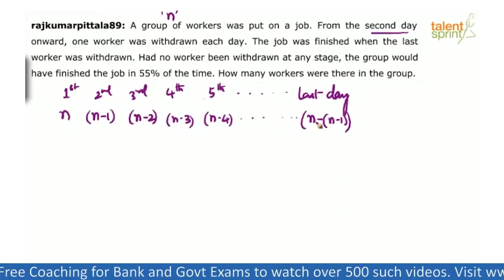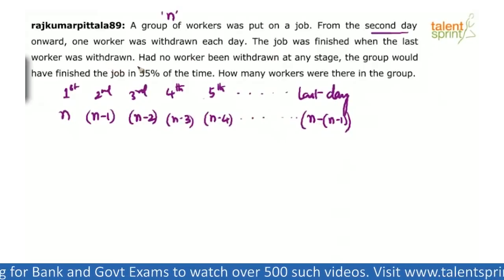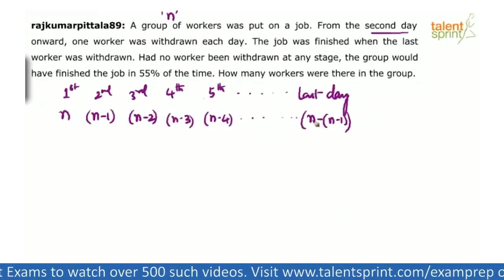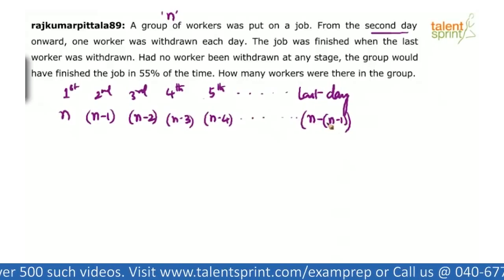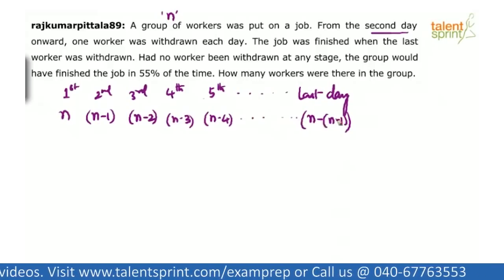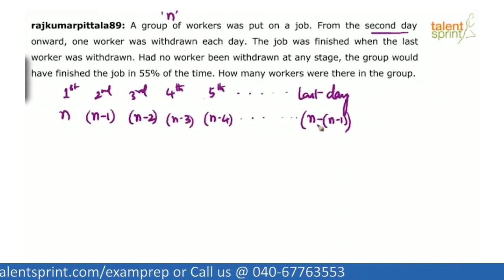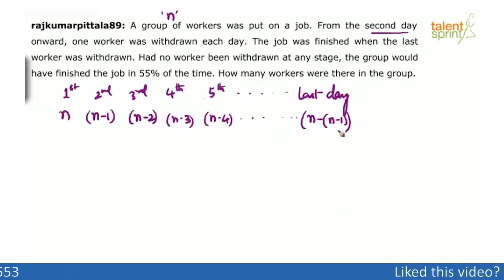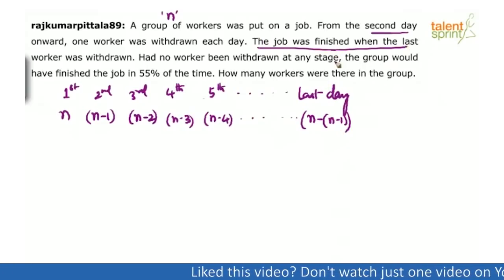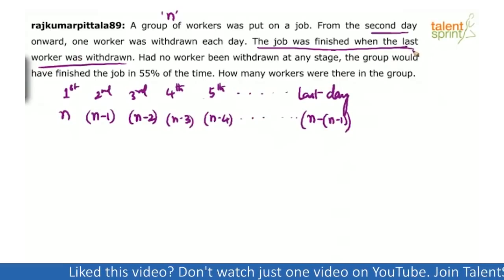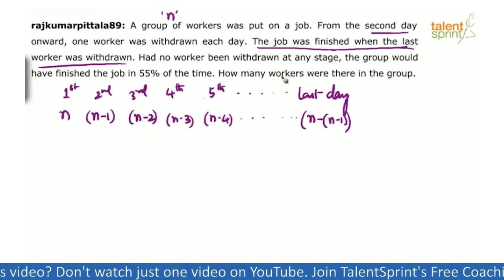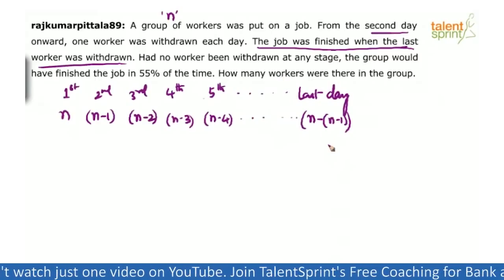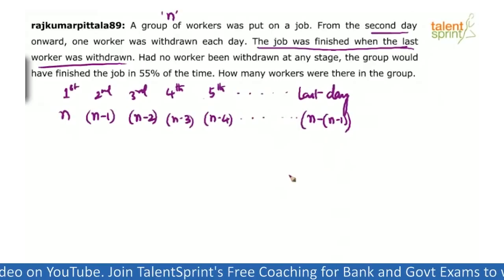The question says every day one worker is withdrawn and the work got over on the day when the last worker was withdrawn. Now, n minus (n minus 1) equals n minus n plus 1, which is 1. So on the last day, only one worker was there and the job got finished.